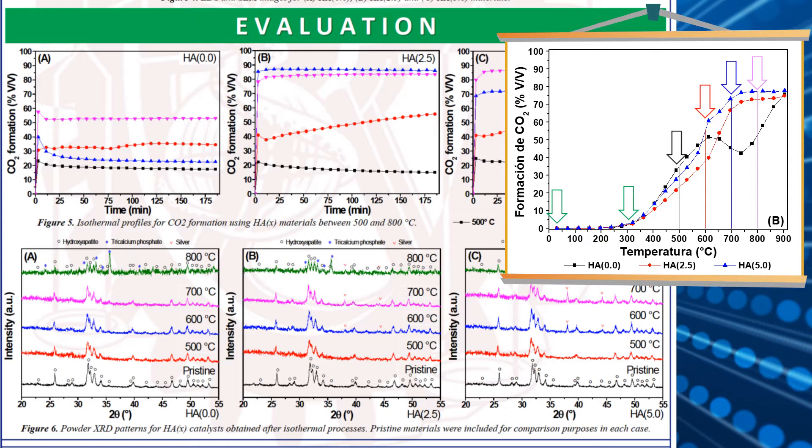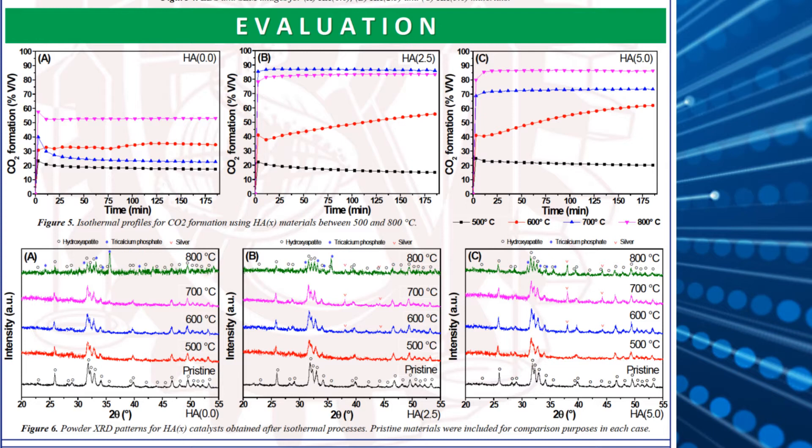Moreover, isotherm tests showed that carbon dioxide production was maintained during three hours when silver-doped catalysts were used, evidencing their high thermal stability under the carbon monoxide and oxygen atmosphere.